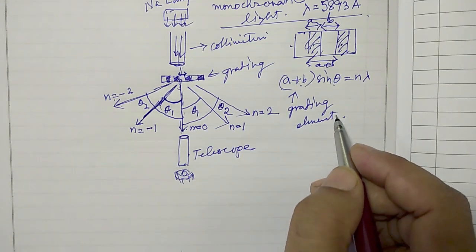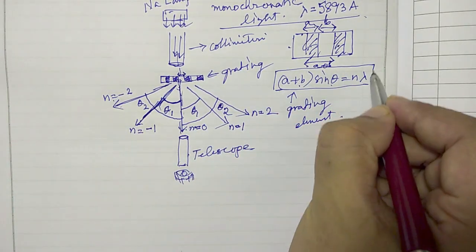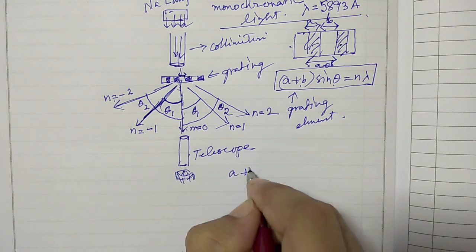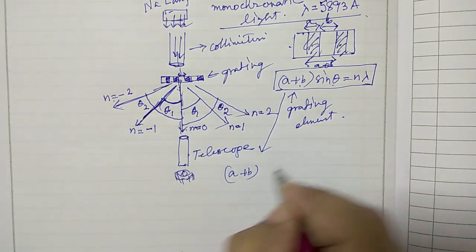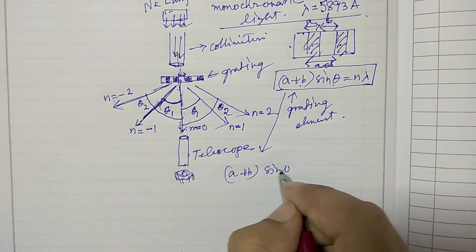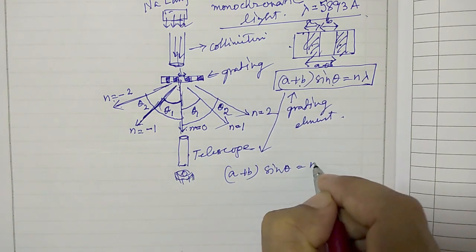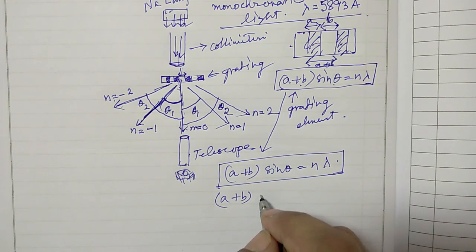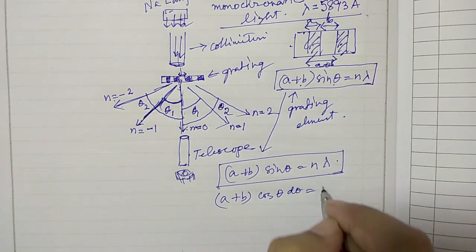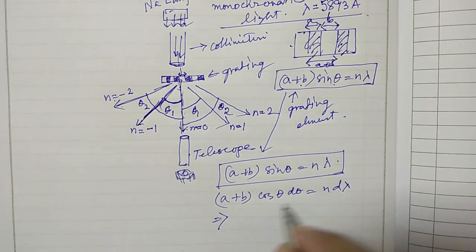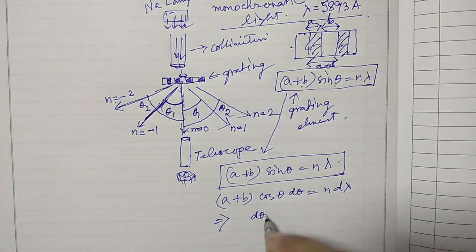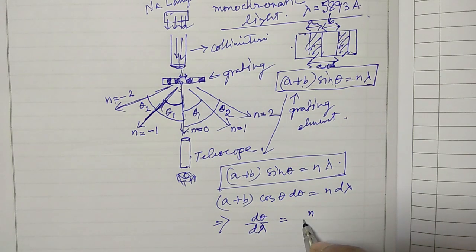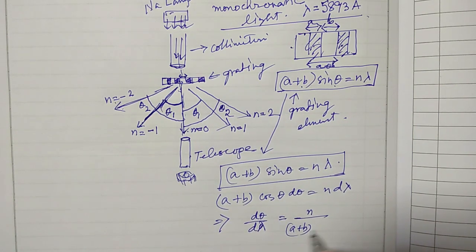Once we have the grating equation, then next what we can do is take a derivative of this. The derivative of this grating equation you get is (a+b) cos theta d theta equals n d lambda. From here, d theta by d lambda equals n divided by (a+b) cos theta.